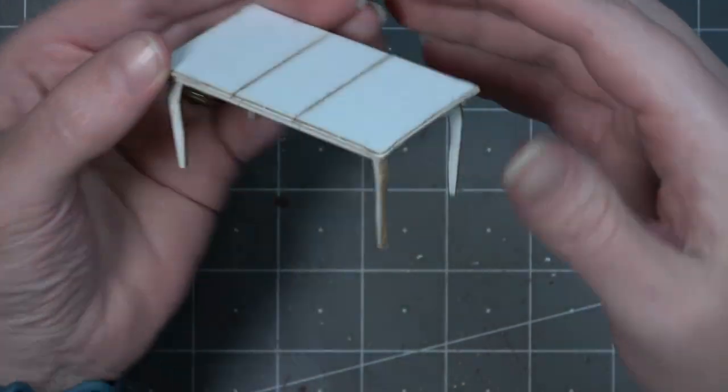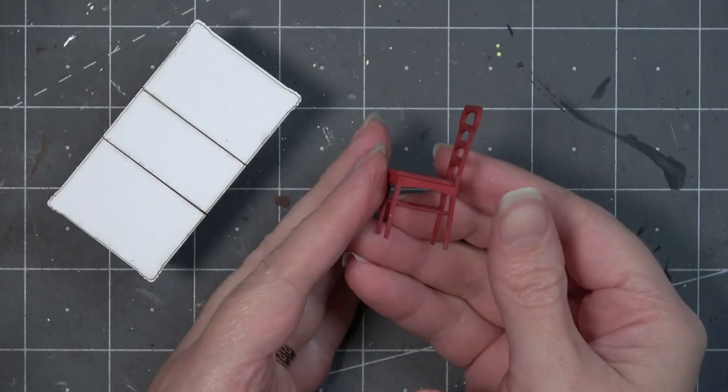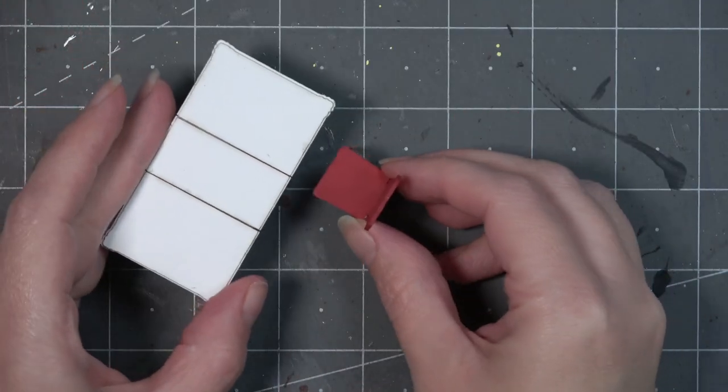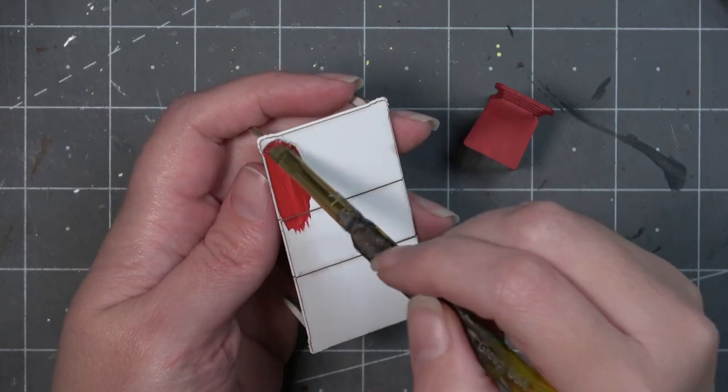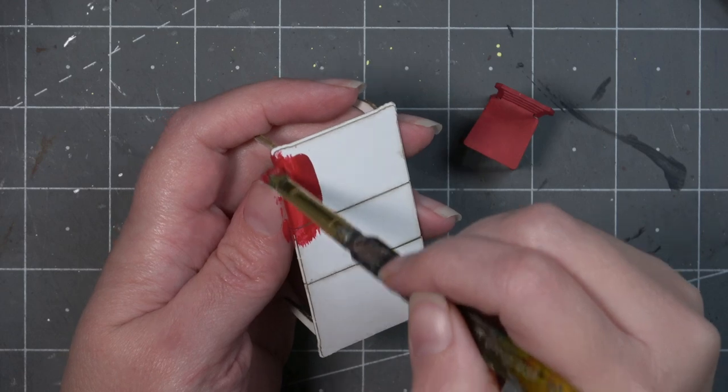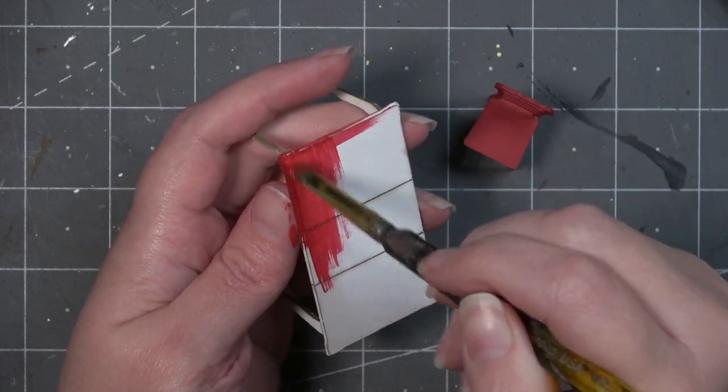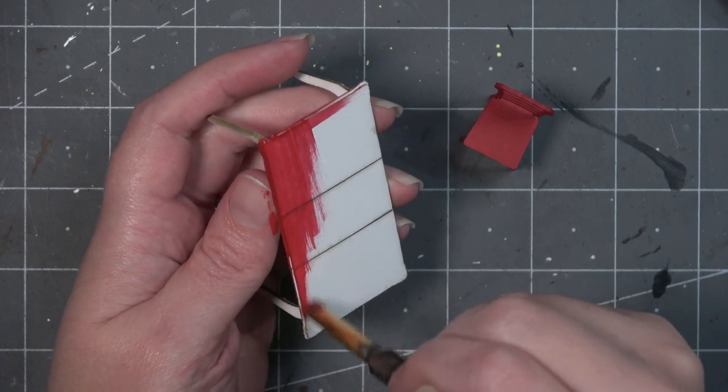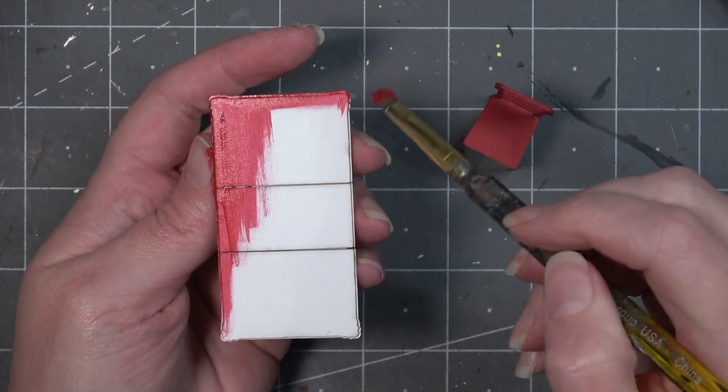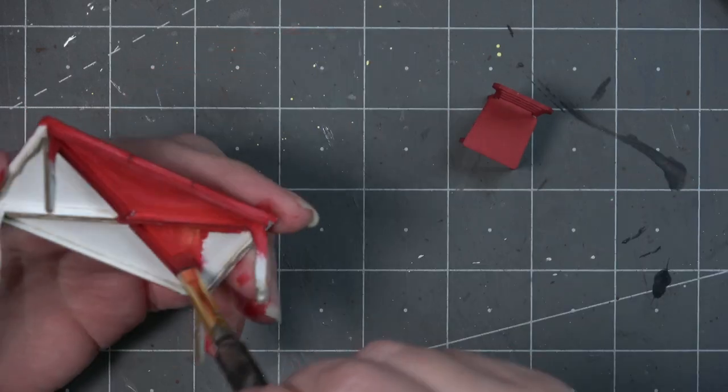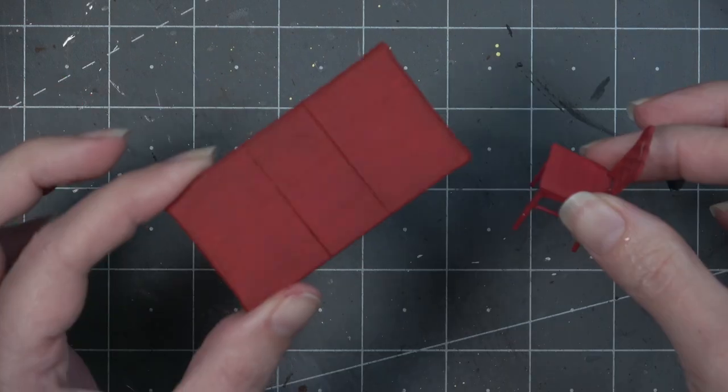So this is the final look of our 1:24 scale table and now it's time to paint. I also have 1:24 scale chairs which fit very same way that I showed you with the 1:12 scale chairs. Again I suggest that you use very thin layers of acrylic paint as you are painting these so that nothing warps. This is cardstock paper after all. It also helps if you paint both sides of the paper at the same time so there isn't an unequal amount of moisture.